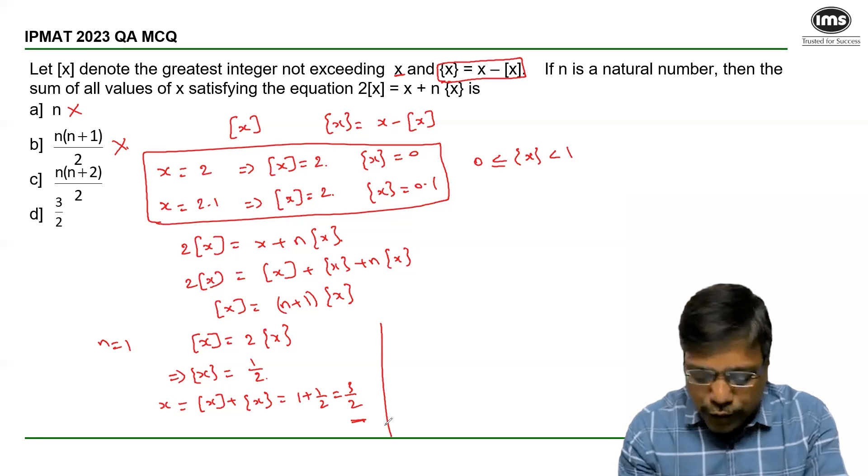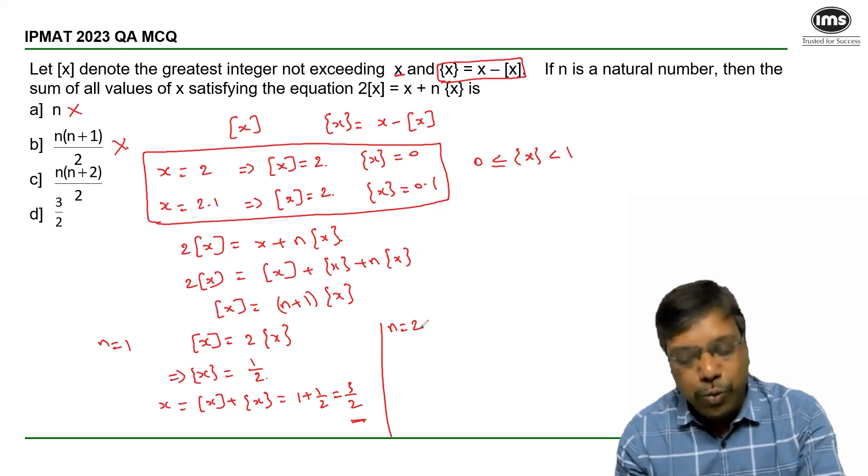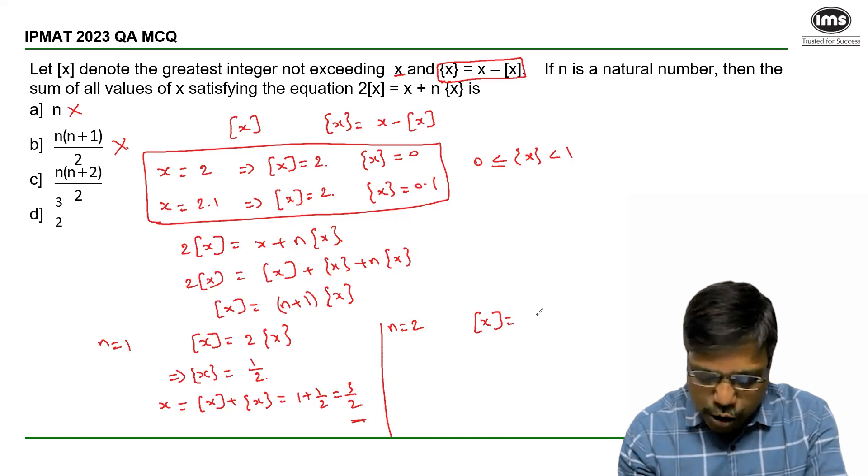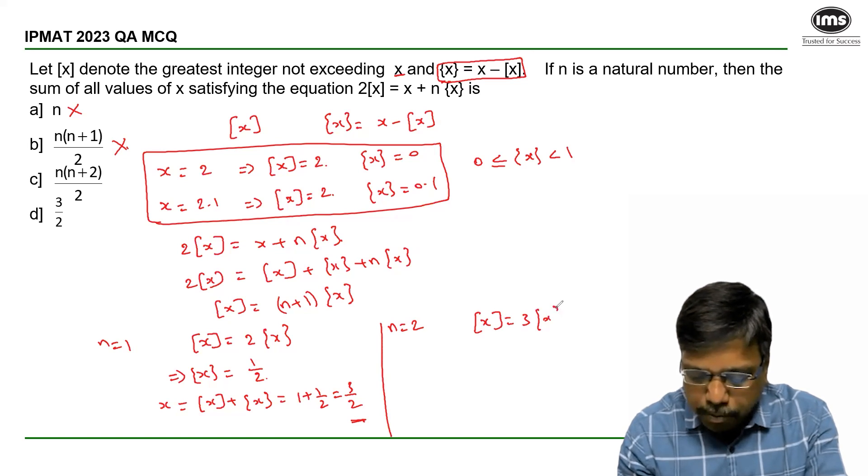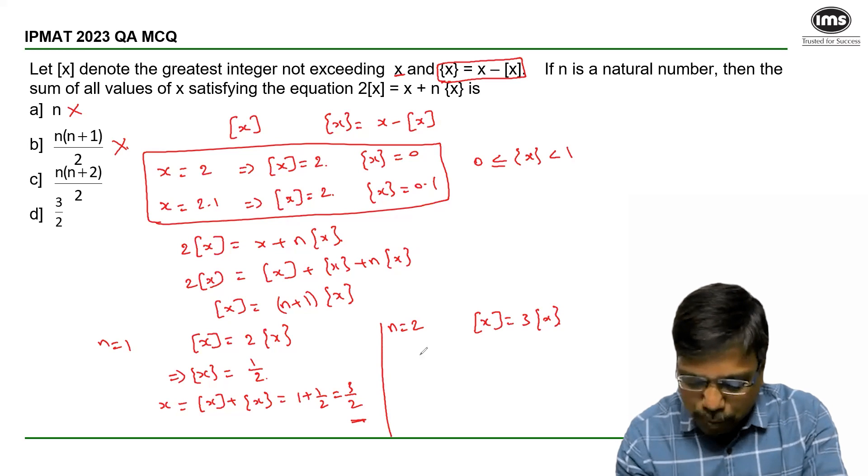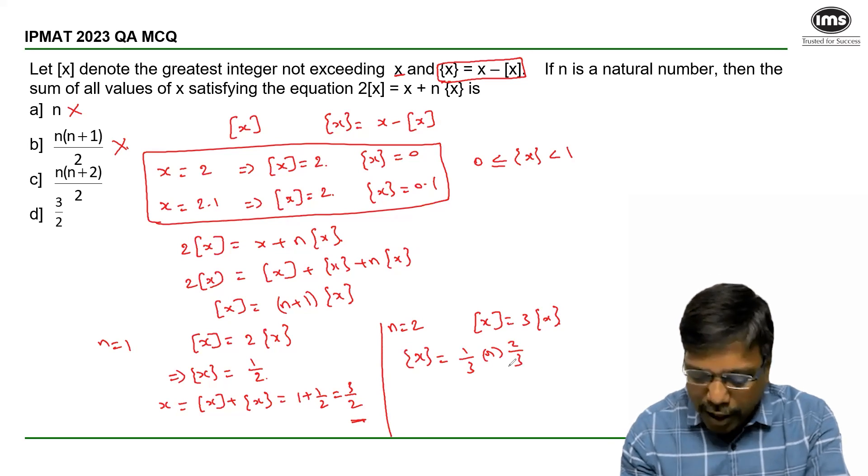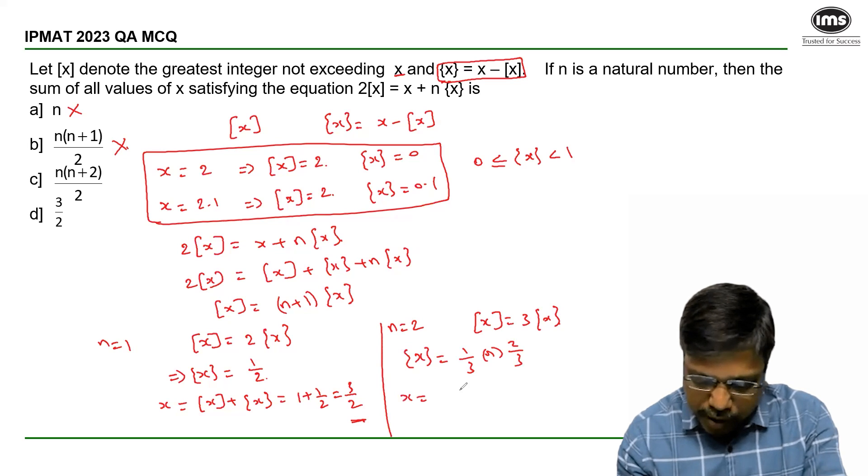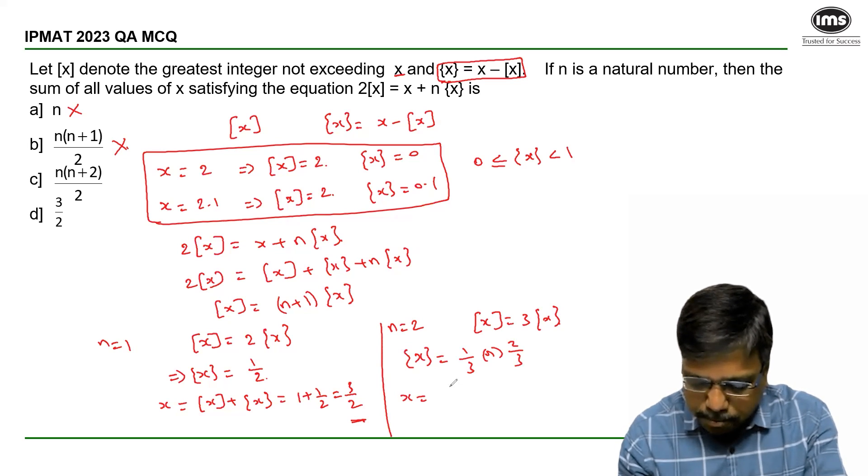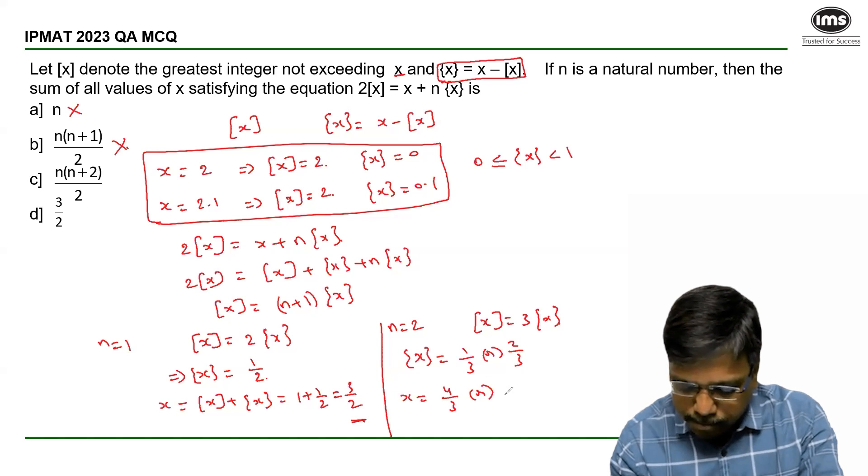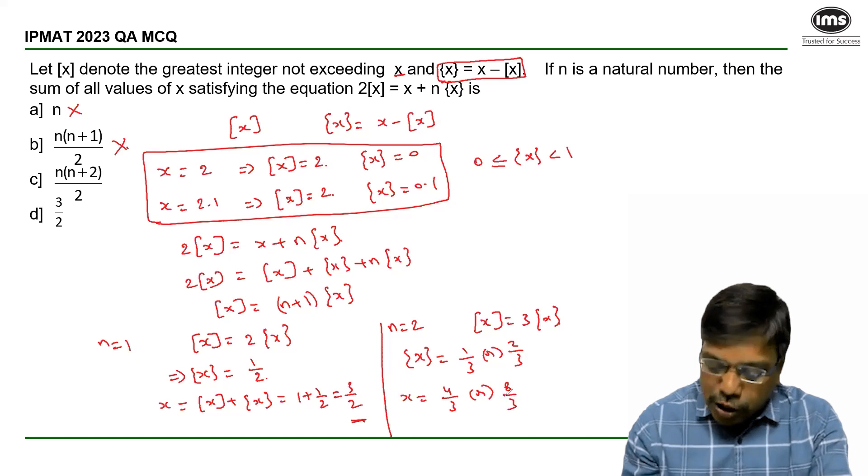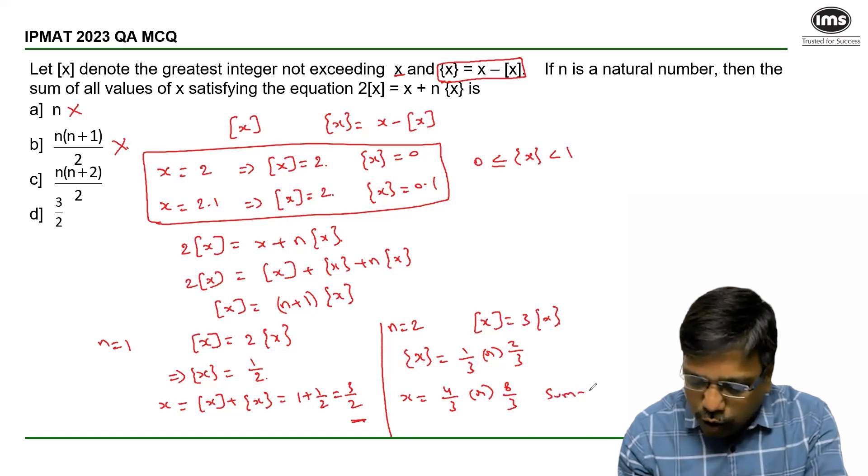To eliminate one of the remaining two, let me take n = 2, so [x] = 3{x}. Which means {x} can be either 1/3 or 2/3. So x can be [x] + {x} = 4/3 or 8/3. The sum of all values of x is 4/3 + 8/3 = 4.